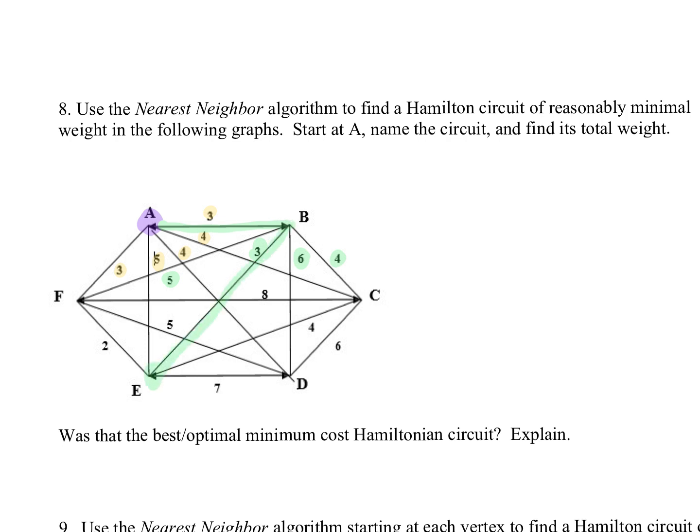So now I'm at vertex E. From vertex E I've got this two, I've got this two, I've got this seven, I've got this four. I've got two, seven, or four up here. I'm going to take this two that takes me up to vertex F.